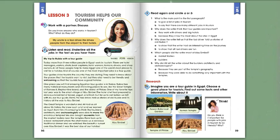One place you will find amazing Egyptian tour guides is in Nubia. Nubia has many historical monuments and interesting places to see, like the Great Temple of Ramses II, Elephantine Island, and the Island of Fili. One of my favorite trips last year was to the small village of Abu Simbel. The hotel chef had prepared a delicious breakfast of bread, yogurt, and fresh fruit for us to eat before we left with Ali, our tour guide. Rami, the taxi driver, told us stories of old Nubia and its history all the way to Abu Simbel.